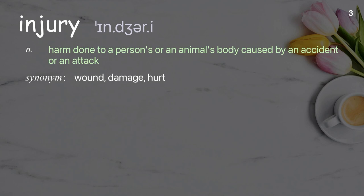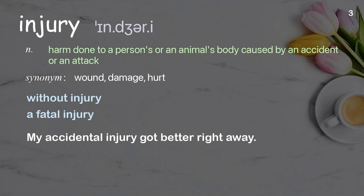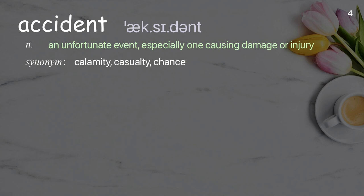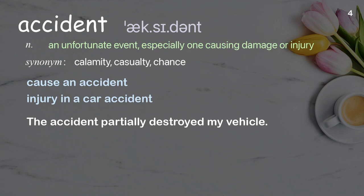Injury: harm done to a person's or an animal's body caused by an accident or an attack. Examples: without injury; a fatal injury. My accidental injury got better right away. Accident: an unfortunate event, especially one causing damage or injury. Injury in a car accident. The accident partially destroyed my vehicle.